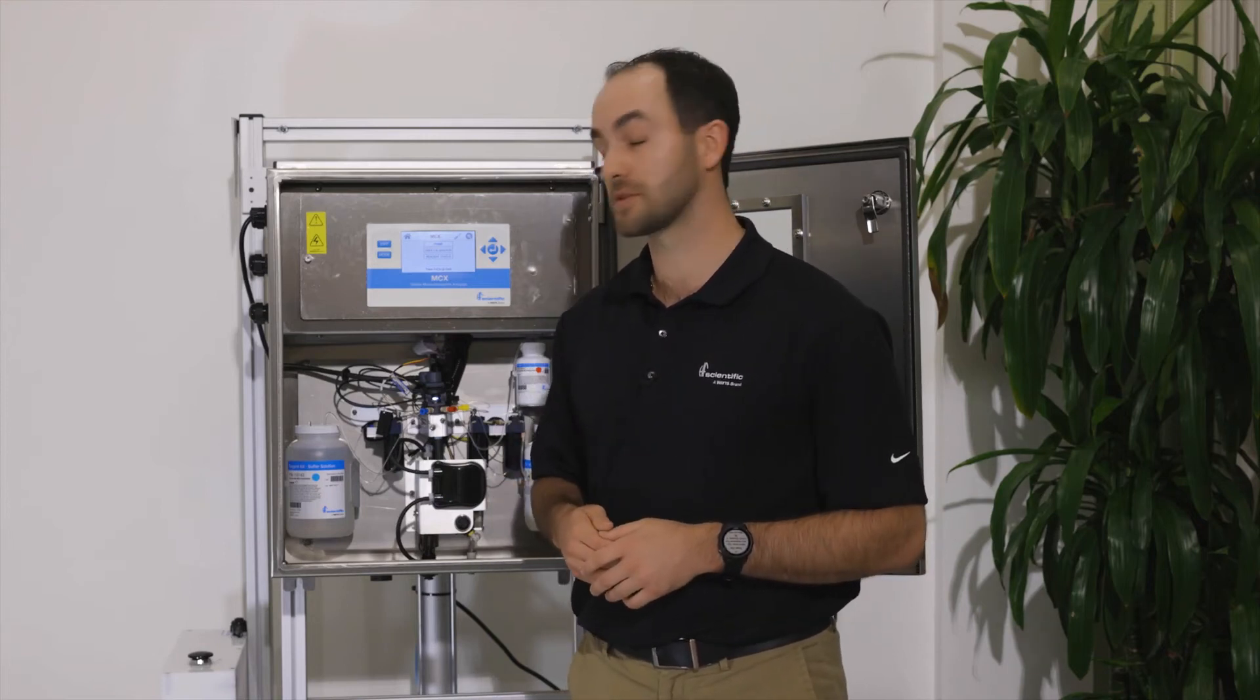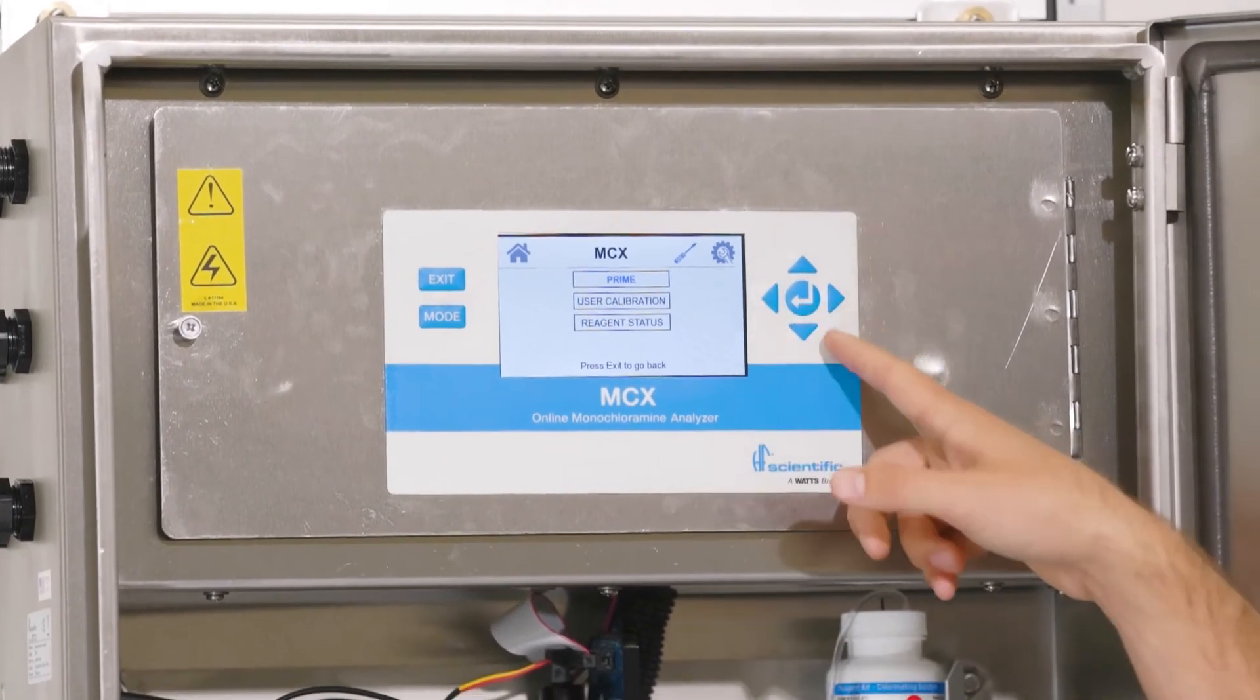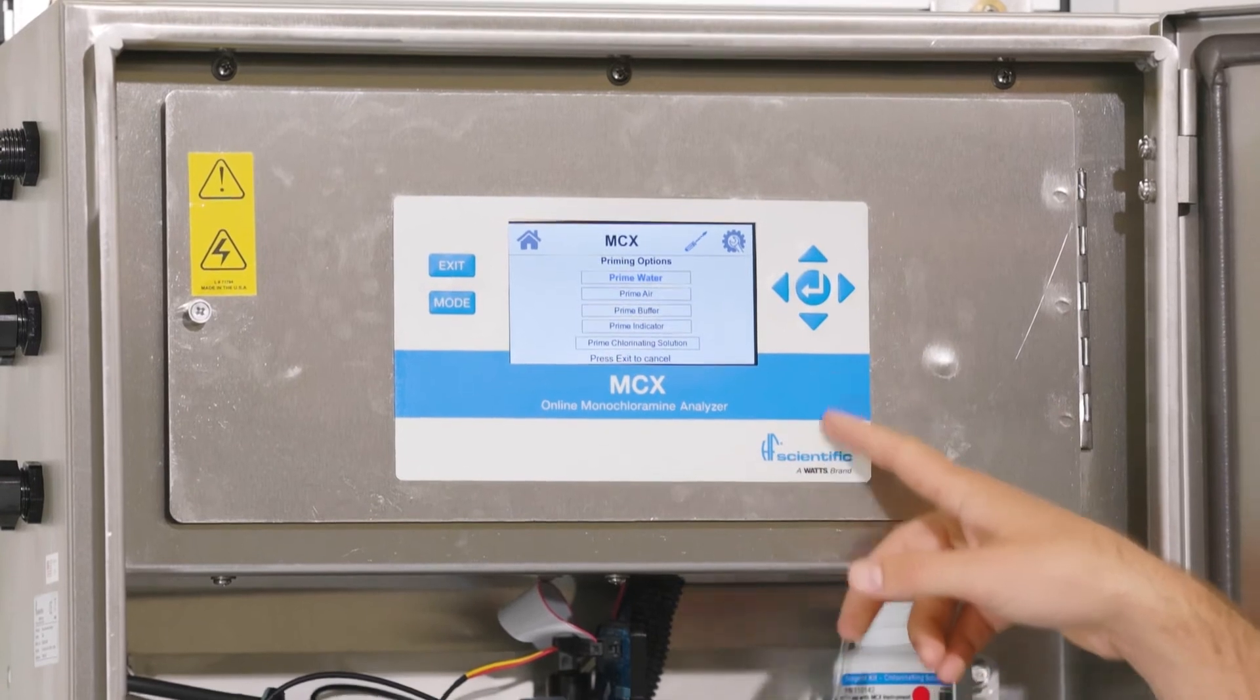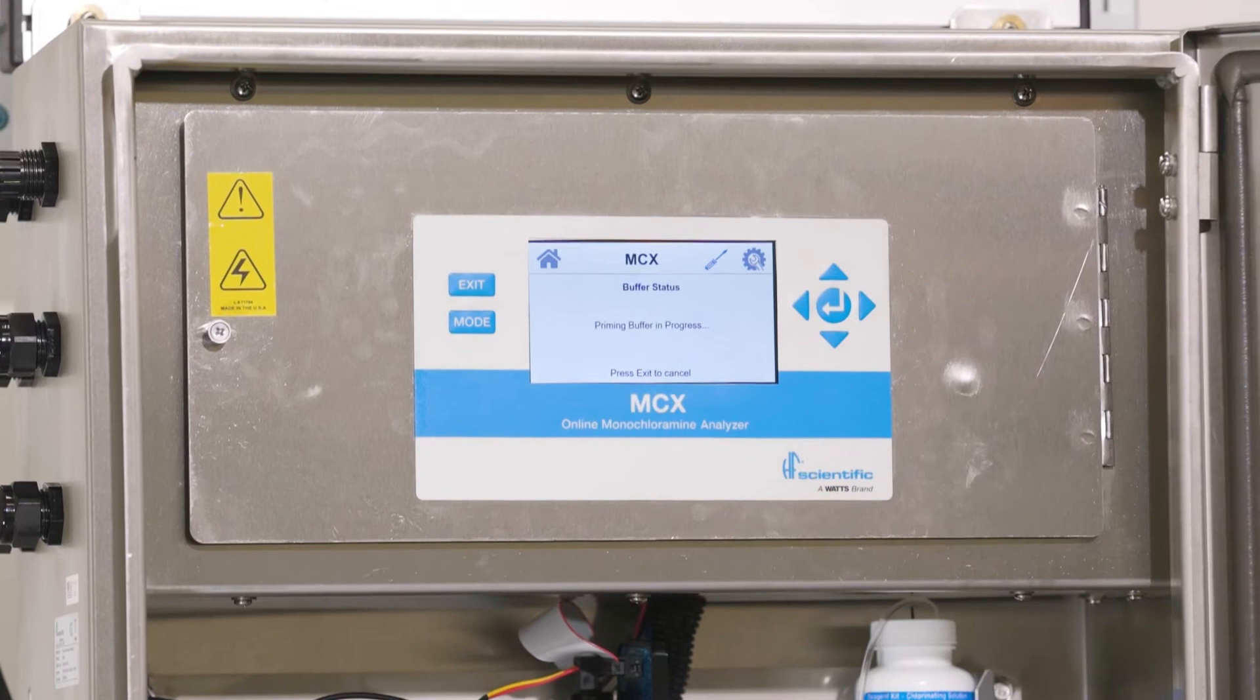Once all three reagent bottles are in, we're ready to start our priming process. We'll start by priming our buffer solution. On the screen, press the enter button to select prime. Use the down arrow to go down to buffer and hit the enter button to prime the buffer.